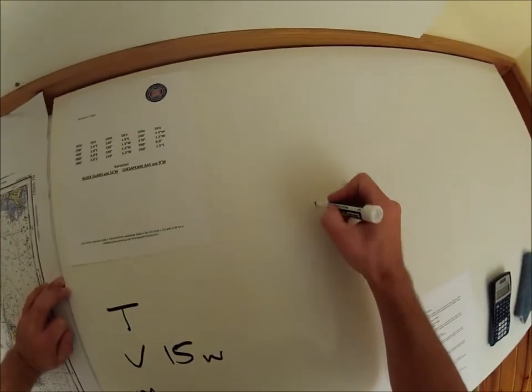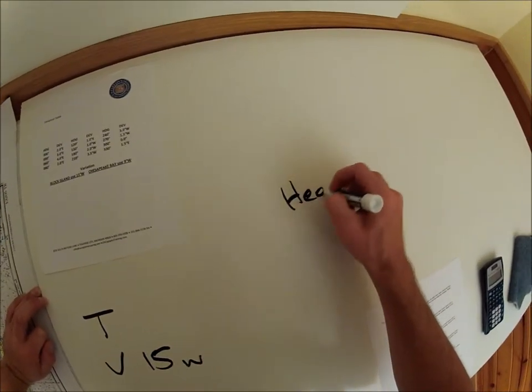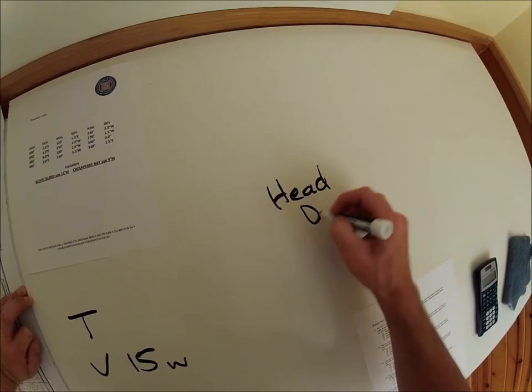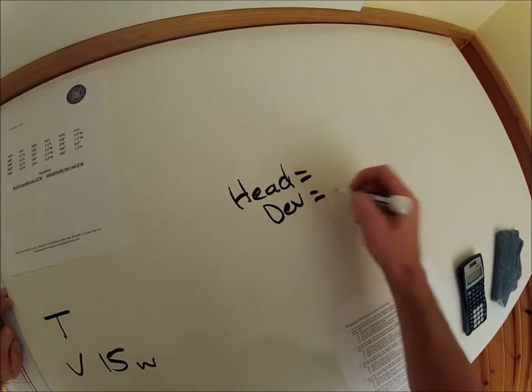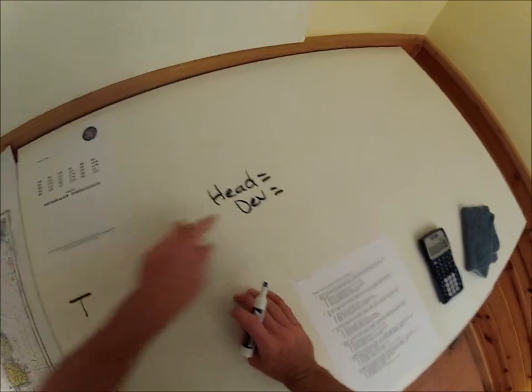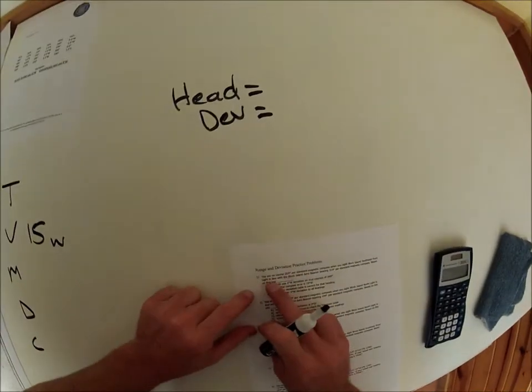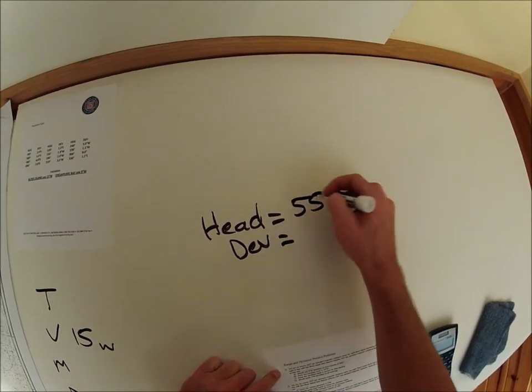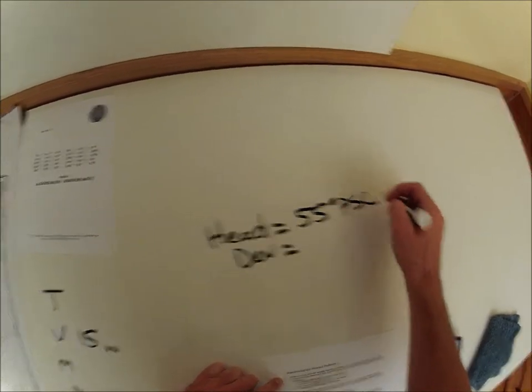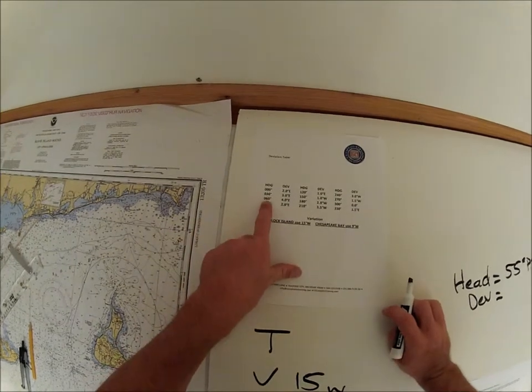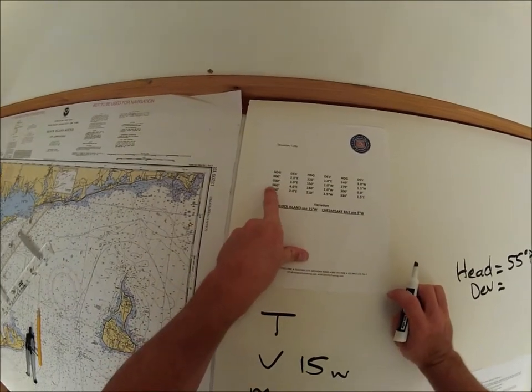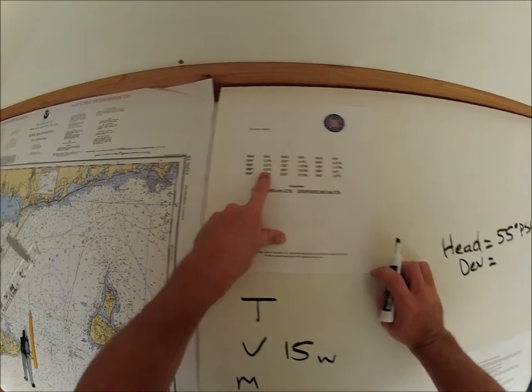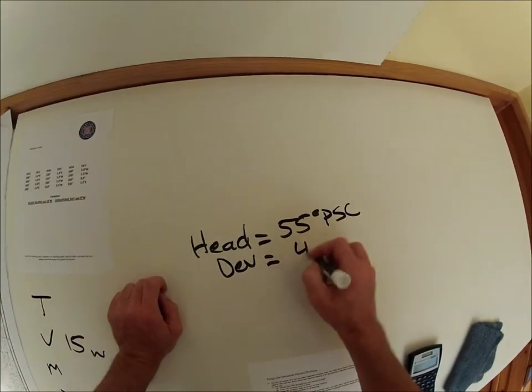One other thing we need is the heading. Gave us a heading, which in turn we can get a deviation for. And this is what we're checking. So you're on course 55 PSC, 55 degrees PSC. The deviation for 55 is about 4 east, right? 60 is 4 east, so 4 east.